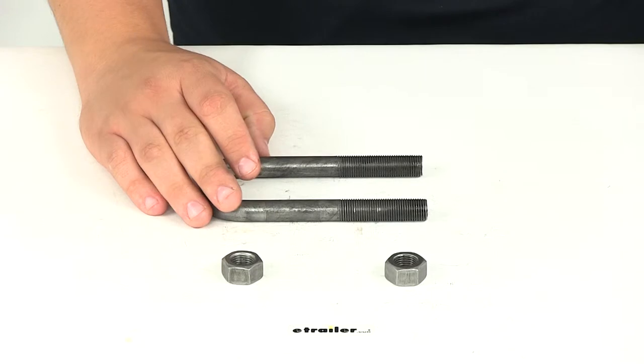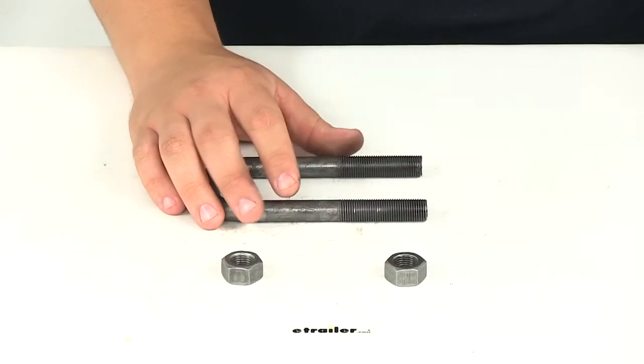This is designed to fit square one and three quarter inch wide trailer axles and again it's going to include both nuts.